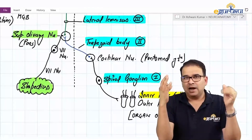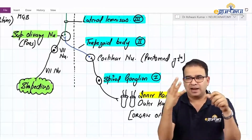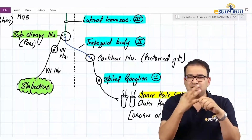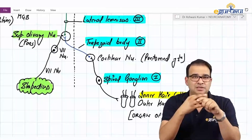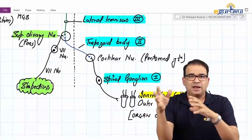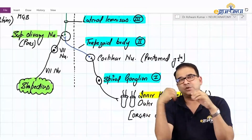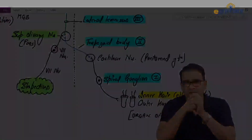With that, we now have three lemnisci in hand — the medial lemniscus and spinal lemniscus discussed in the spinal cord, and now the lateral lemniscus understood here in the auditory pathway.